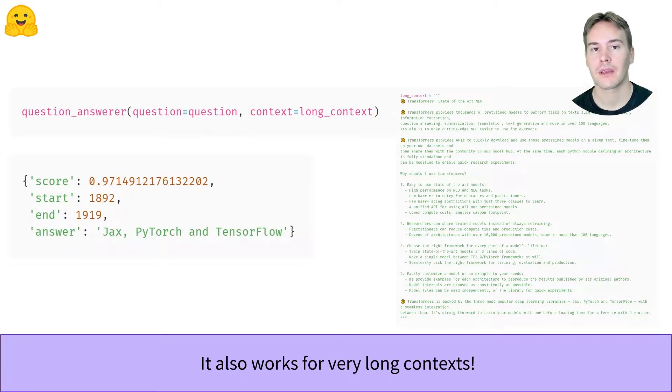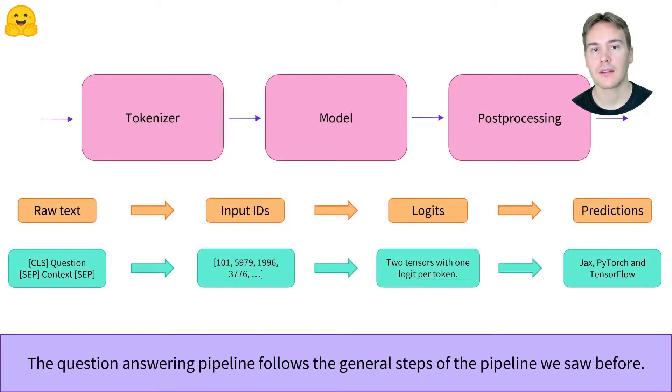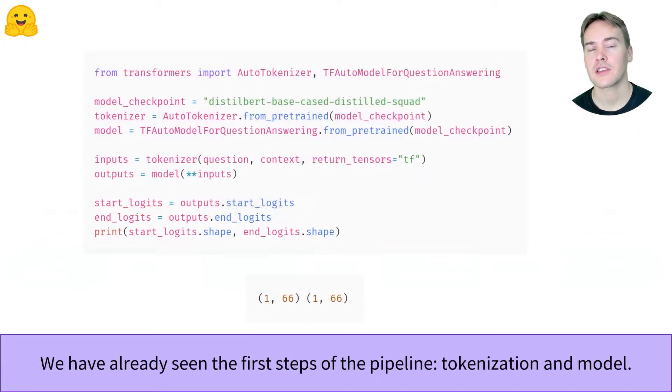The question answering pipeline follows the same steps as the other pipelines. The question and context are tokenized as a sentence pair, fed to the model, then some post-processing is applied. Tokenization and model steps should be familiar. We use the auto class suitable for question answering instead of sequence classification.